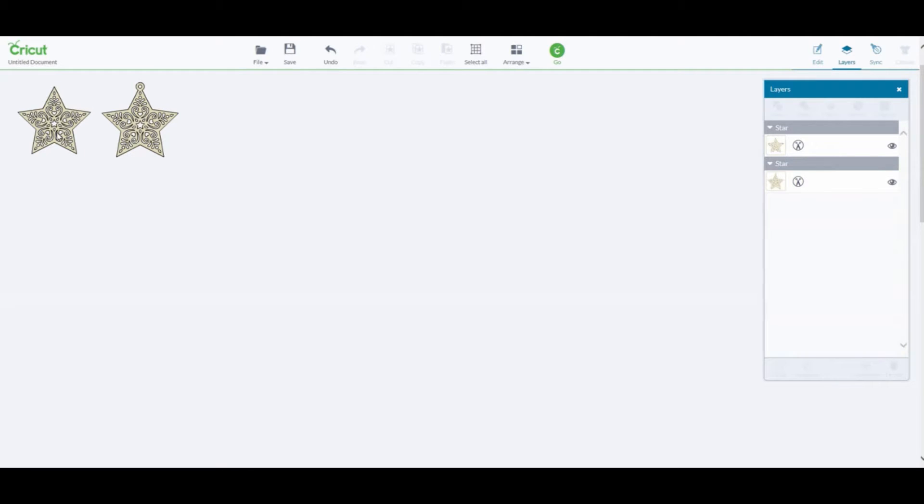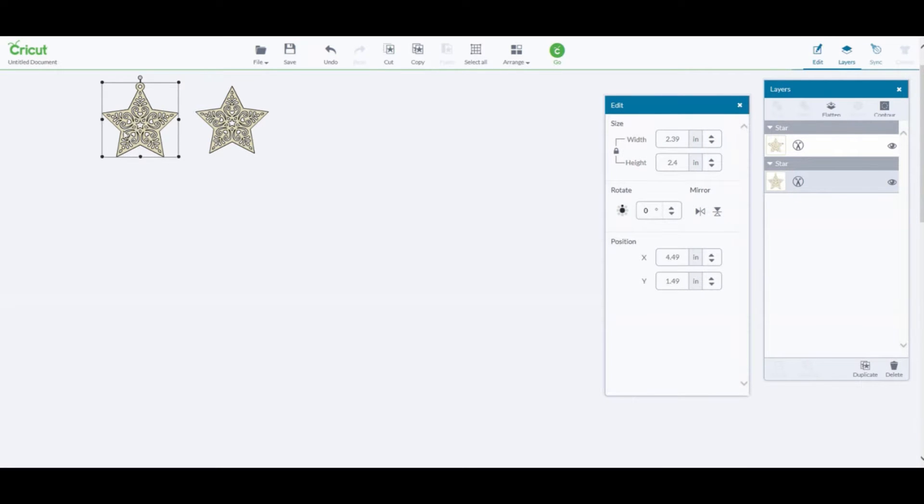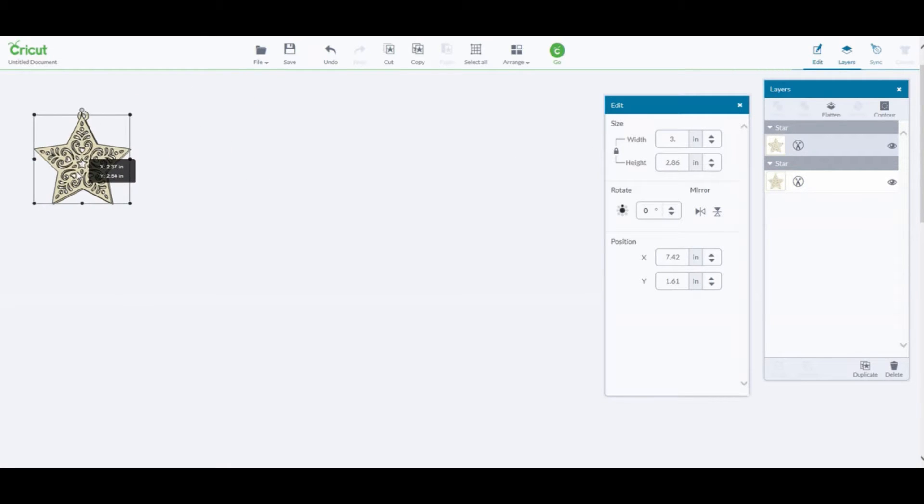Note that one of the stars has a loop at the top of the star. You will need one star with the loop and you will need six stars that do not have the loop. The size of the stars is up to you but make sure that both the stars are the same size.